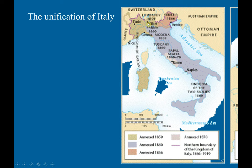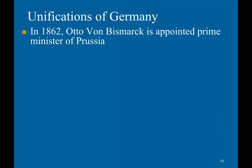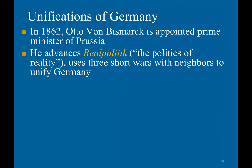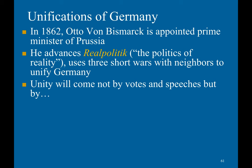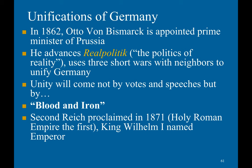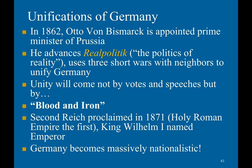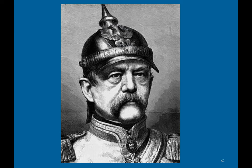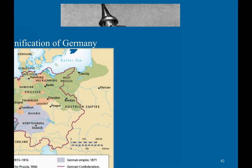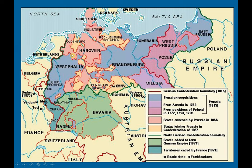In 1862, Otto von Bismarck was appointed Prime Minister of Prussia. He advanced Realpolitik — the politics of reality — using brief wars with neighbors to unify Germany. He believed that unity would come not by votes and speeches, but by blood and iron. The Second Reich was proclaimed in 1871, with King Wilhelm I being proclaimed Emperor. Germany became incredibly nationalistic. This is a picture of Otto von Bismarck, and this is a map depicting the slow unification of Germany — and also a map of what Germany looked like before unification, an absolute mess of various territories.